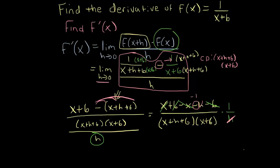And so now let's bring back this limit. So now I have the limit as h goes to 0 of negative 1 over (x+h+6)(x+6).